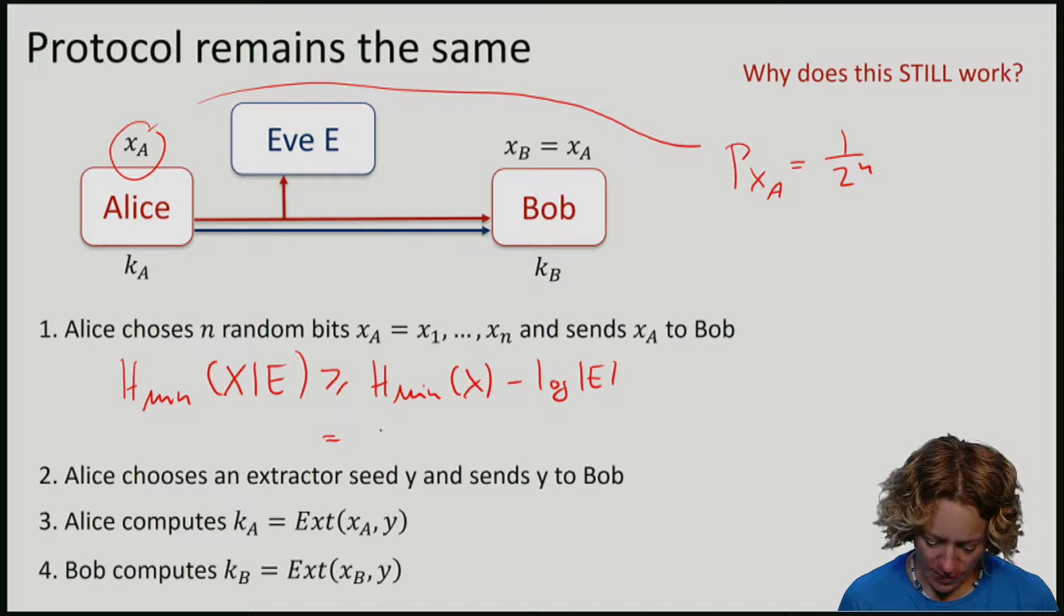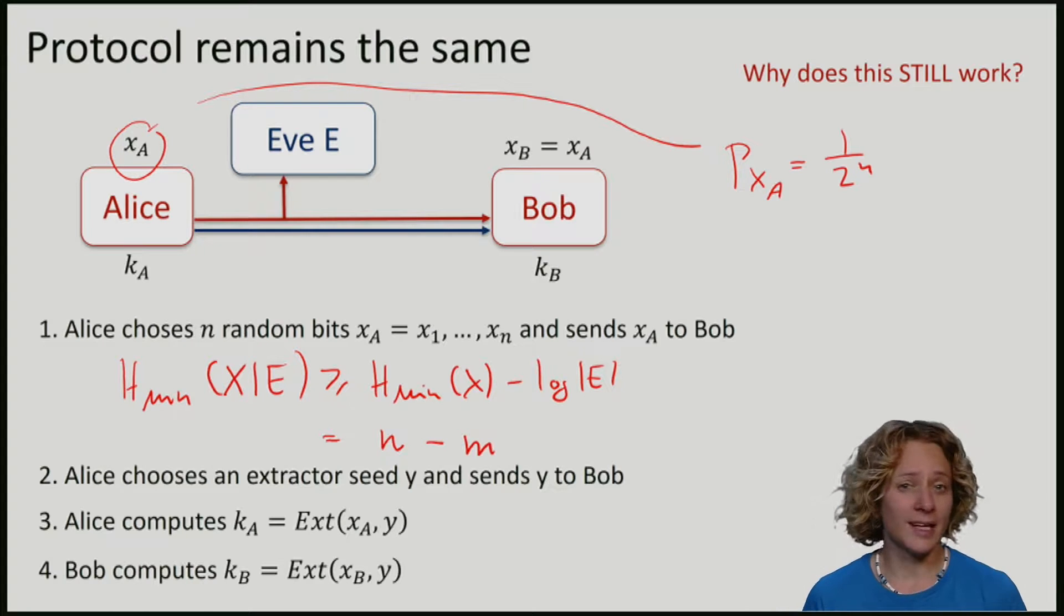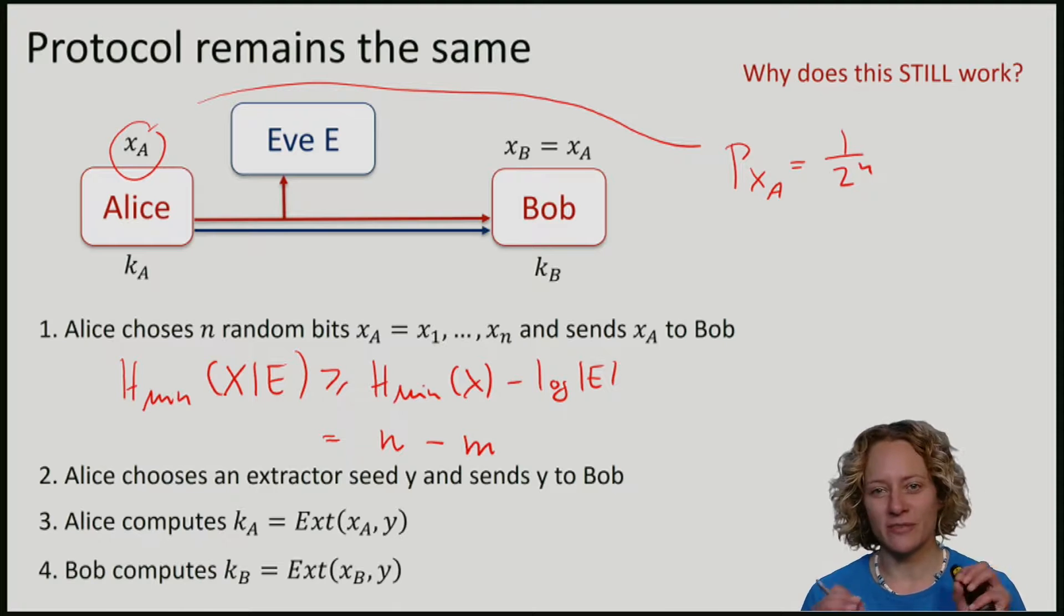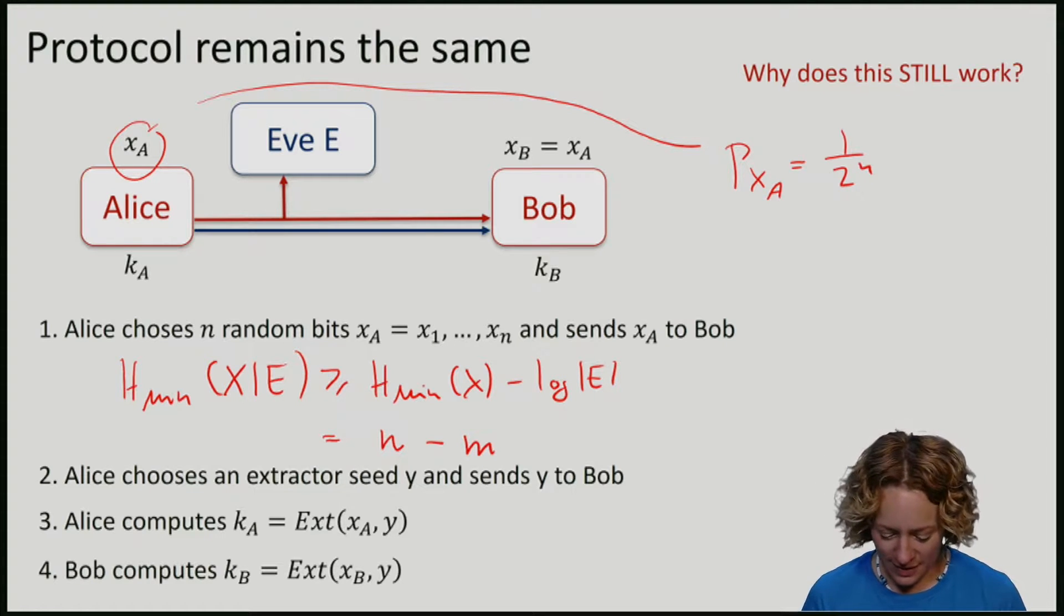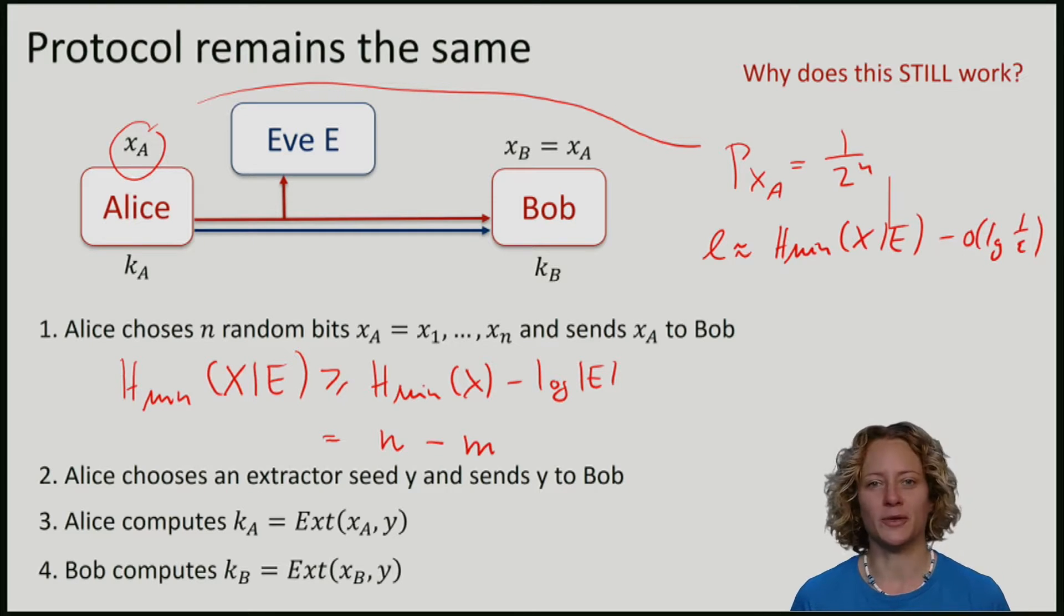This has the property that min entropy is n minus the number of bits that Eve can store, which is m. And now, as before, if I want epsilon secrecy for some fixed epsilon, we get that the number of bits of key that we can produce is determined by this min entropy minus order log 1 over epsilon if we want epsilon secrecy.